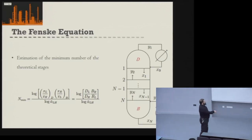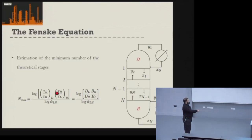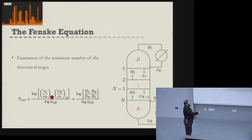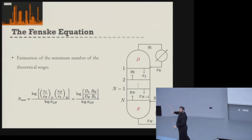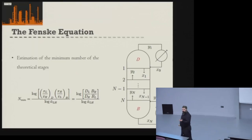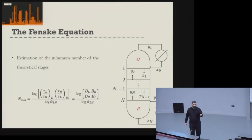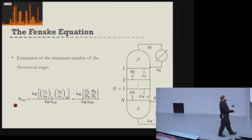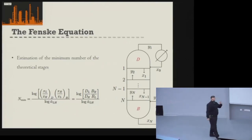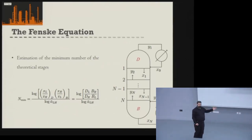From the Fenske equation, knowing just the composition of your light and heavy keys in the top and bottom products you've specified, plus the average relative volatility, you can calculate the minimum number of stages needed to achieve that separation.